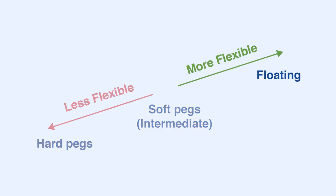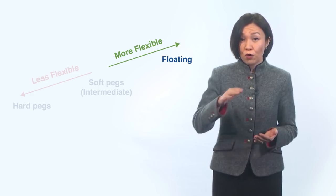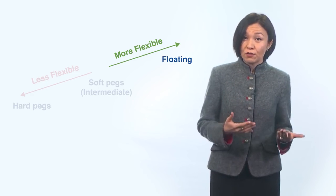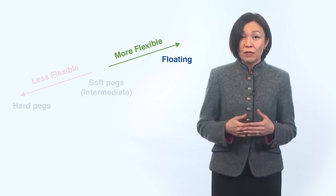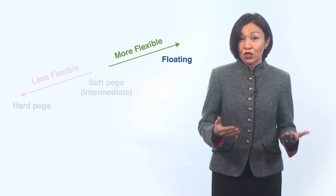At the other end of the spectrum are floating exchange rate regimes. As the name implies, the floating exchange rate is mainly market determined. In countries that allow their exchange rates to float, central banks intervene through purchases or sales of foreign currency in exchange for local currency, mostly to limit short-term exchange rate fluctuations, rather than to achieve an exchange rate objective.